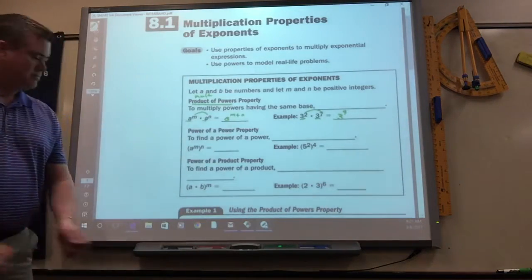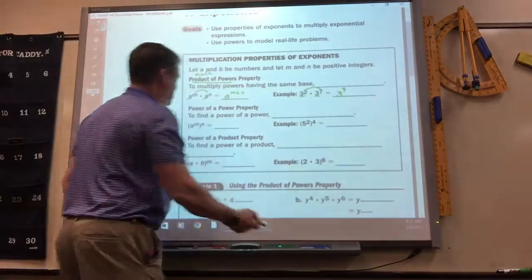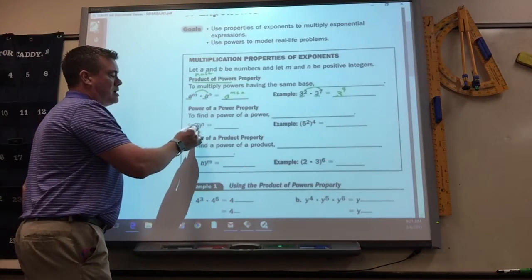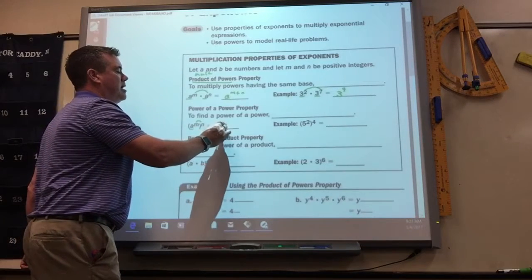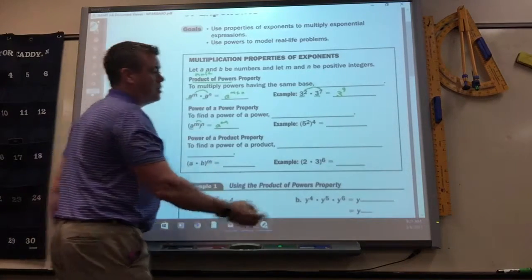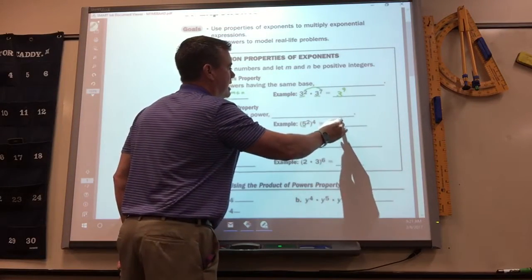Everyone remember that rule? Okay, then power of a power is if you've got one thing raised to two powers, you multiply them. A to the M times N. So here's the example, 5 squared raised to the 4th is 5 to the 8th.